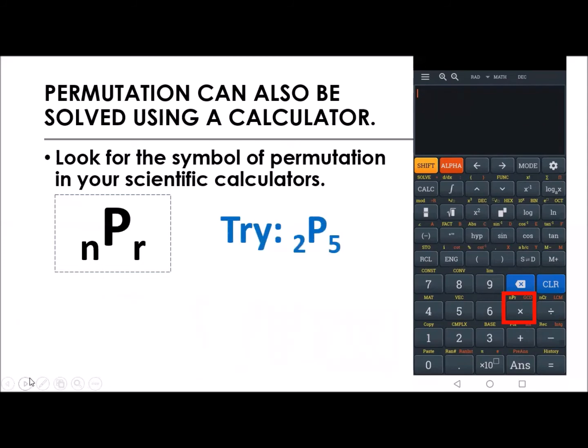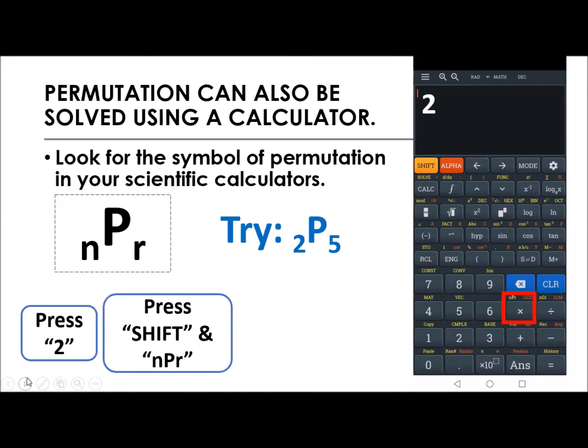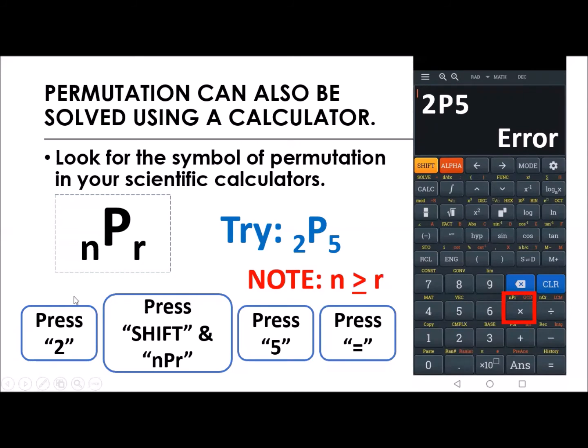So I want you to try this one. Try permutation of 2 taken by 5. Press 2. Press shift NPR. And then press 5. And then press the equal sign. What did you get? Some of you, or most of you, will see there as math error. Now, why do you think that that would be an error? Very good. Because, as I've introduced to you a while ago, the value of n should always be greater than or equal to r. But on this case that I've given, the value of n is 2, which is lower than the value of r. So it's not allowed. That's why we're getting a math error. I hope that is clear.